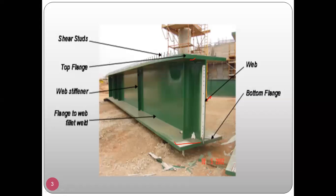Shear studs are used when plate girders are used as deck girders — when you are going to cast a deck on top of the compression flange. You can also see vertical stiffeners provided along the longitudinal axis of the web, called web stiffeners. Web stiffeners are needed because the web is very slender and may be subjected to buckling, crippling, or crushing. To stiffen the web you provide stiffeners vertically along its longitudinal length.